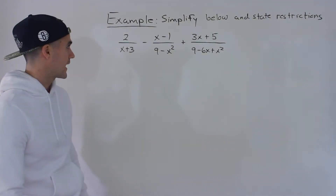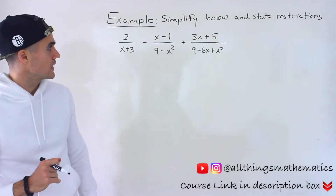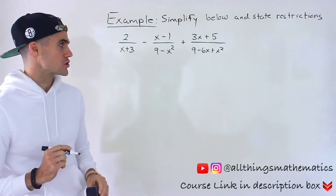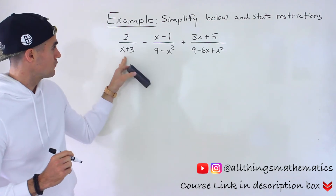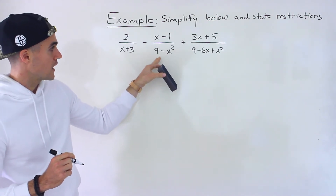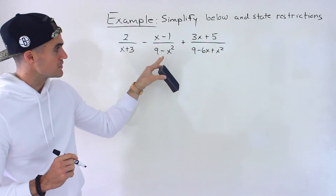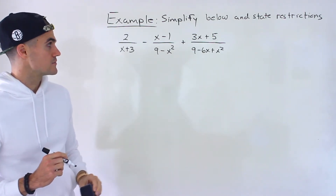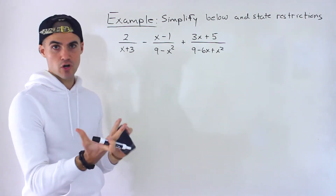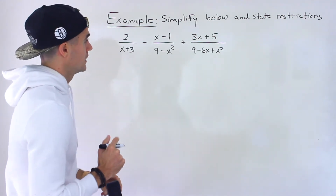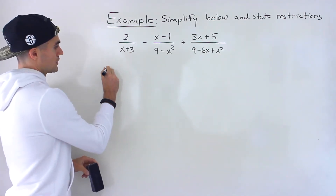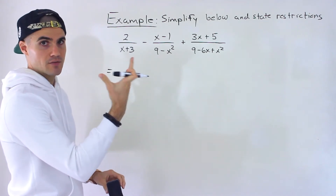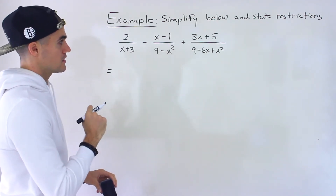What's up, everyone? Patrick here. Welcome back. In this next question, we have to take this expression, simplify it, and also state the restrictions along the way. We have 2 over x plus 3, minus x minus 1 over 9 minus x squared, plus 3x plus 5 over 9 minus 6x plus x squared. We are adding and subtracting rational expressions here, so the first thing you want to do is make sure that everything is factored in the numerators and denominators.